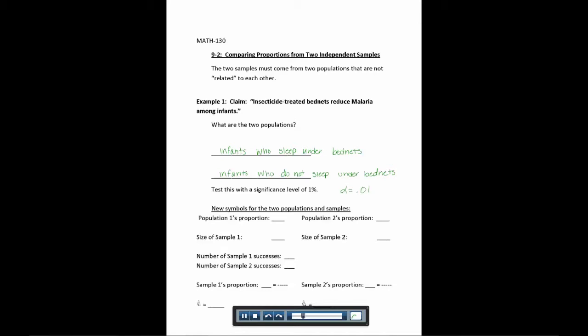Now, you won't really need this when you're doing it on the calculator, but just in case you look in the book or you see somewhere else, I want you to know the symbols that are used. So now that we have two different samples and populations that we're looking at, we use a little 1 by one of them and a little 2 by each of the symbols for the other one.